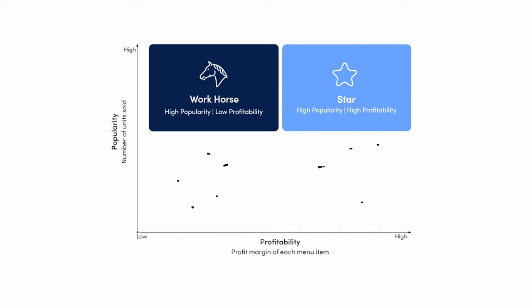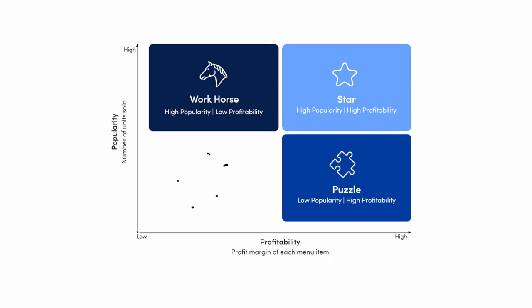The bottom corner opposite — these are our puzzle pieces. These puzzle pieces are great big question marks. What do we do about them? They make us good money, but they're not really popular. Maybe small tweaks in the recipe itself could help us create a little bit more popularity so that profitability comes to work for us.